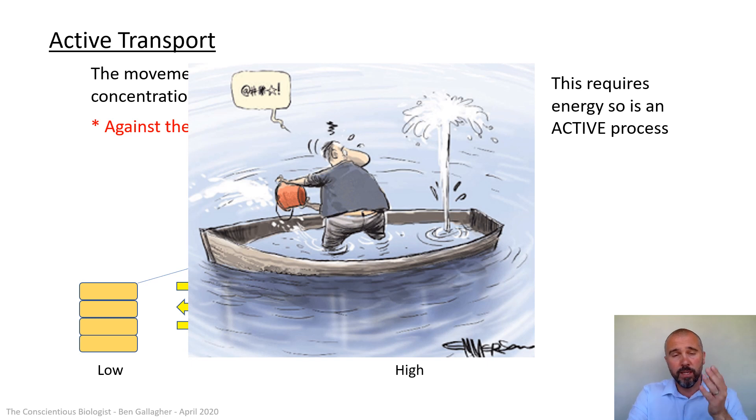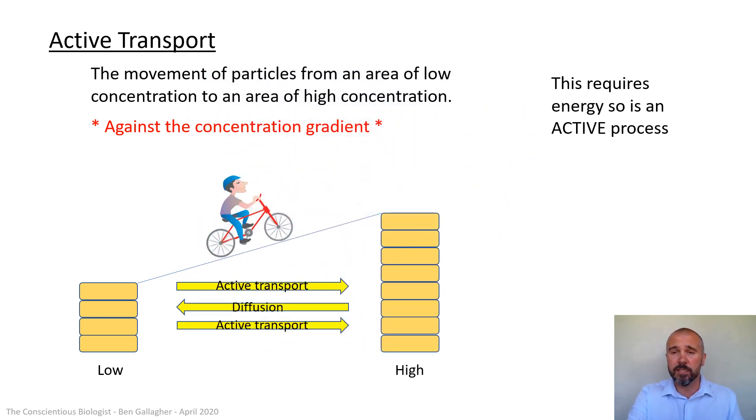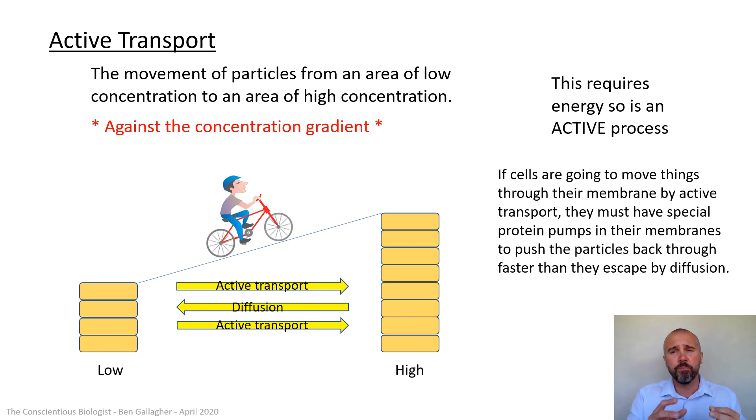But because it's difficult, in the picture there, you've got a man bailing the stuff out. It's not a man bailing stuff out though. It's that if cells are going to move things through their membrane by active transport, they must have special protein pumps in their membranes. So proteins, you might remember from other lessons, proteins do everything in cell systems. You've got to have a special protein that's literally grabbing the stuff and throwing it through the membrane against the concentration gradient. And that pump's got to work faster than diffusion going in the other direction. Otherwise, you'll never get the increase that you want.